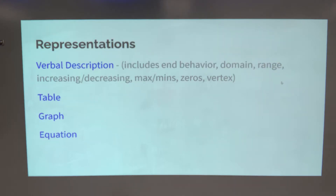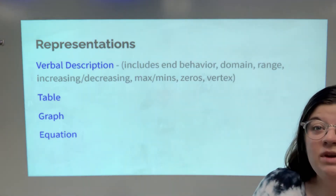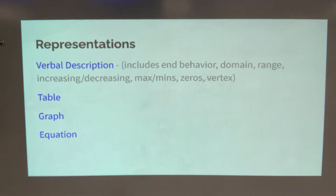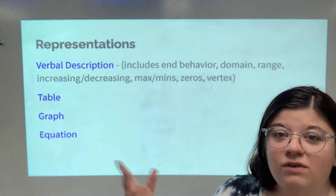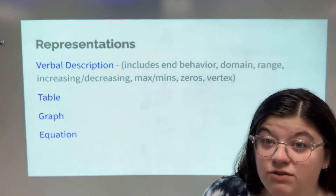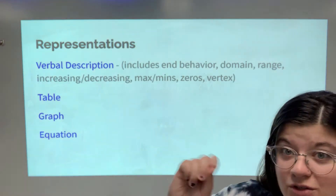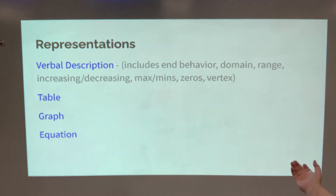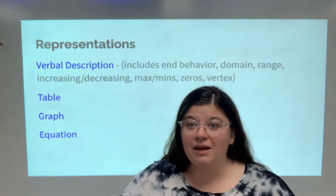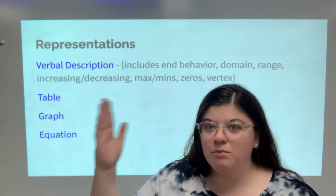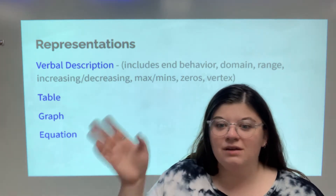The main four ways that we can represent our functions are: verbal description — that can include anything like max and mins, zeros, what interval we're increasing or decreasing, maybe domain and range, transformations, a verbal description of transformations. You can also use a table of values, which usually has x as your input and f(x) or y values as your outputs.